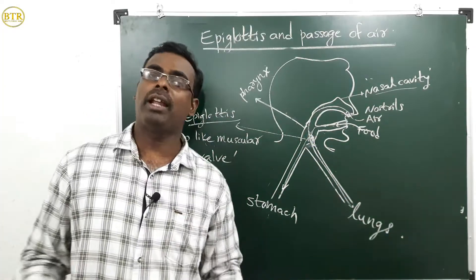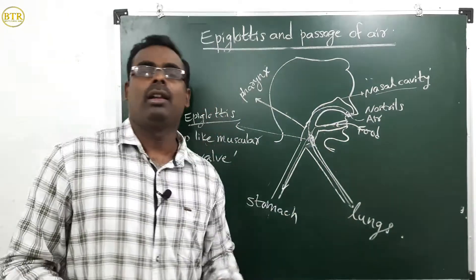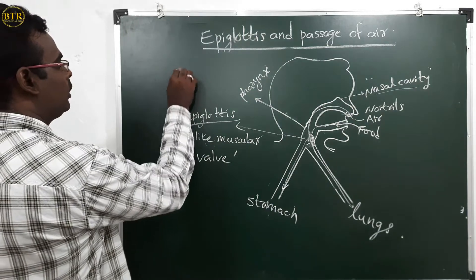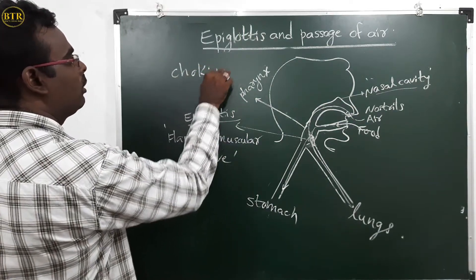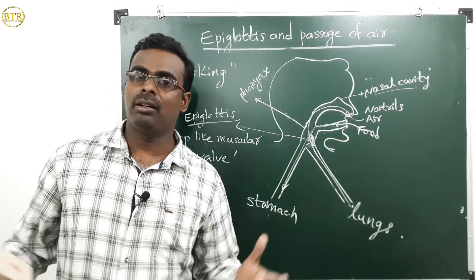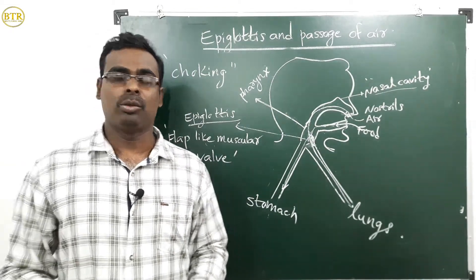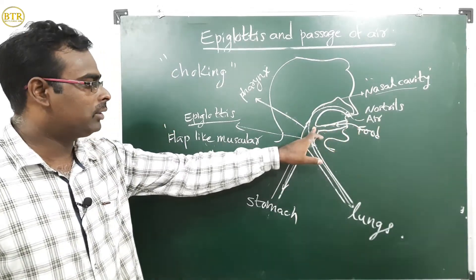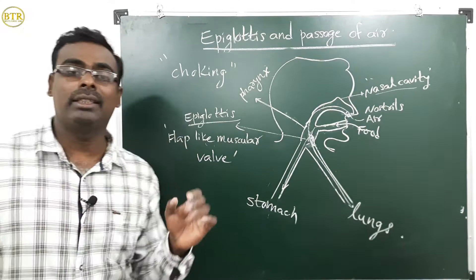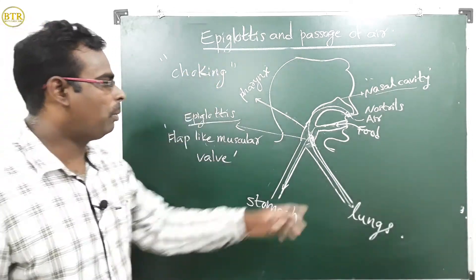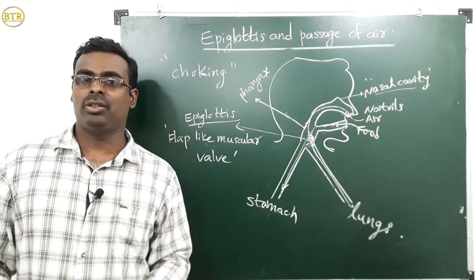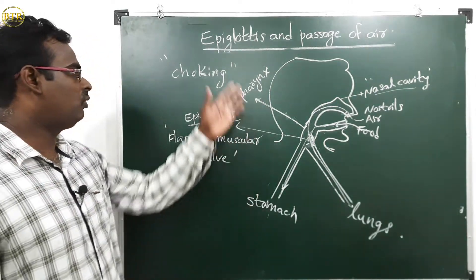If food enters into the lungs, what happens? Sometimes food particles may enter into the lungs — then we will get choking. In choking, suddenly we get tears from the eyes, a cough, and breathing difficulty. That condition is called choking. The function of the epiglottis is controlled by the central nervous system.